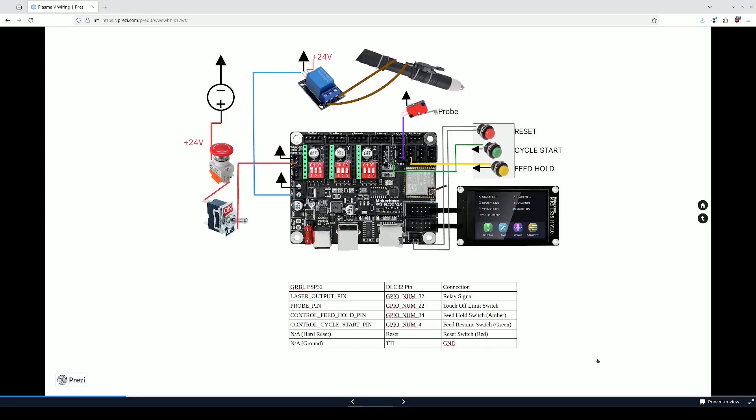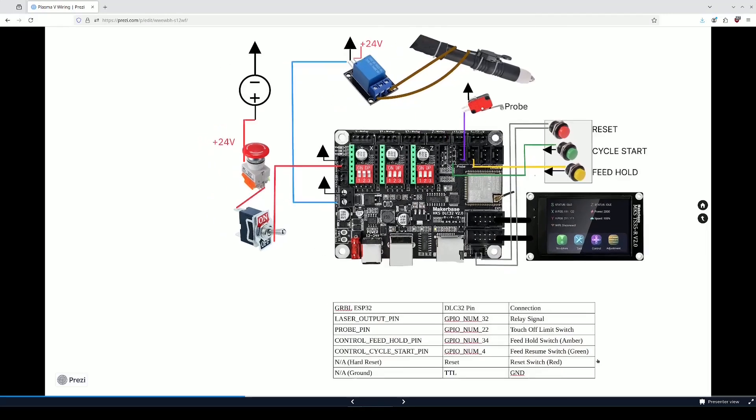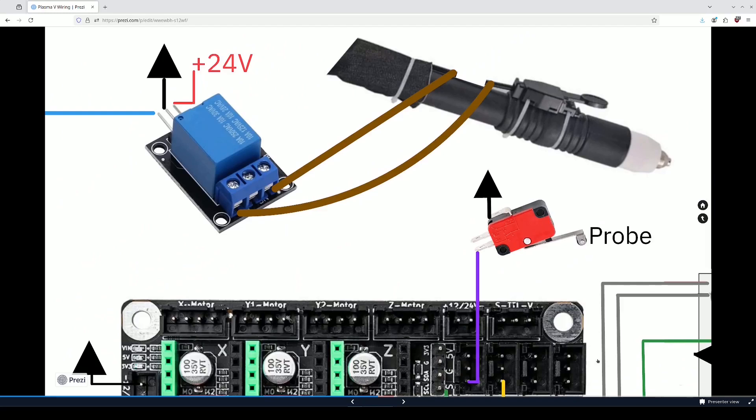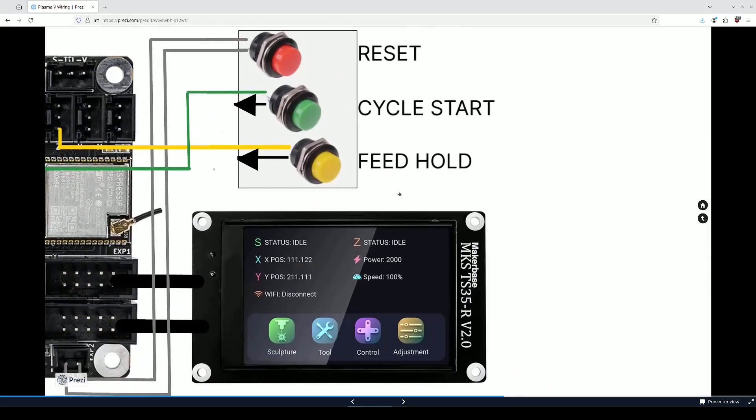Here's an overview of the main parts of the electronics for this project. Starting with the power coming in, that's 24 volts through an e-stop and an on-off switch going into the board. That blue wire is the signal for the relay, which controls the torch. The board sends the signal and the relay closes the connections to start the torch. There's also a probe pin and that's responsible for the touch-off operation. Moving along, we have the hard switches, reset, cycle start and feed hold. Those are standard GRBL operations.